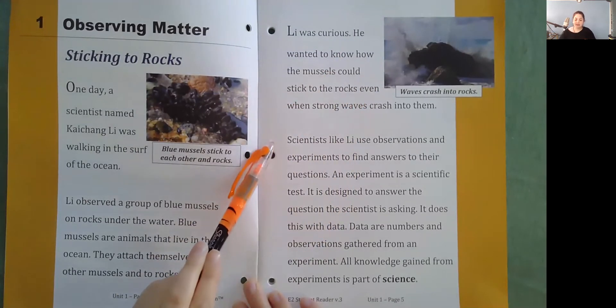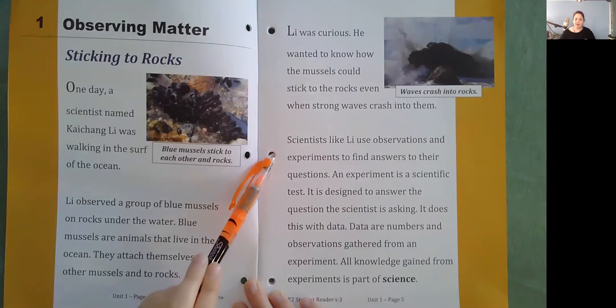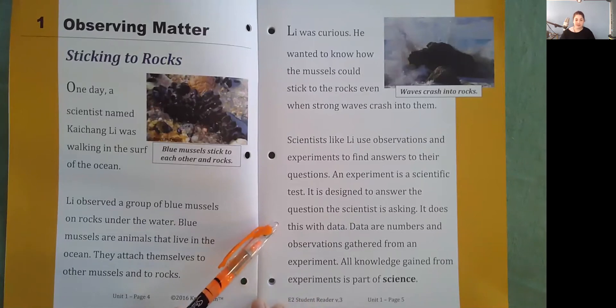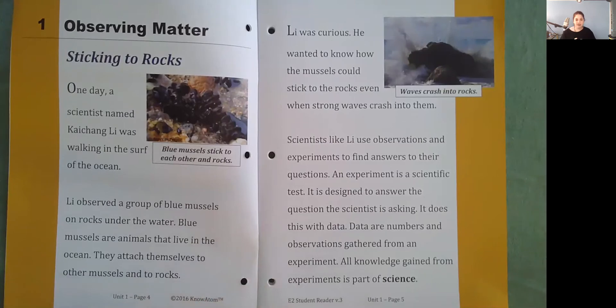Scientists like Li use observations and experiments to find answers to their questions. An experiment is a scientific test. It is designed to answer the question the scientist is asking. It does this with data. Data are numbers and observations gathered from an experiment. All knowledge gained from experiments is part of science.